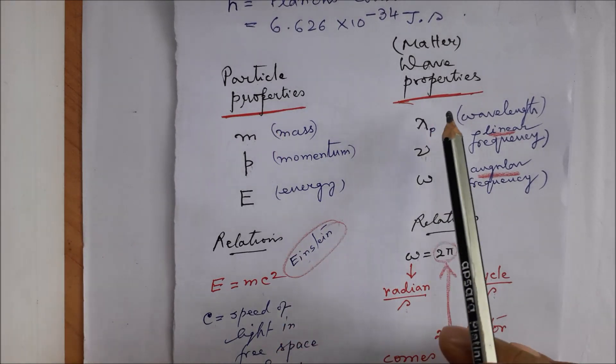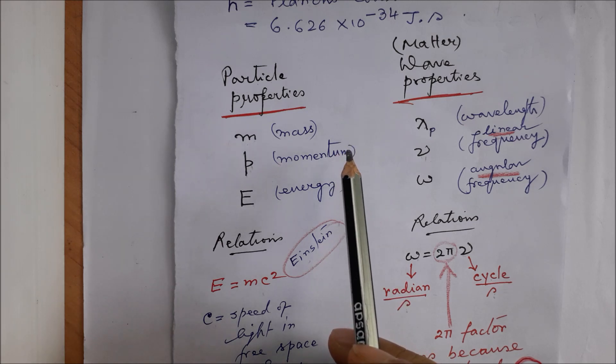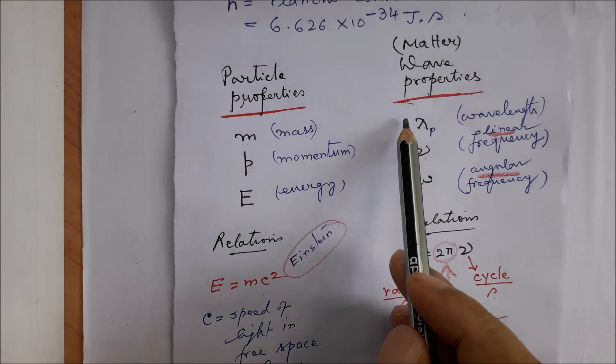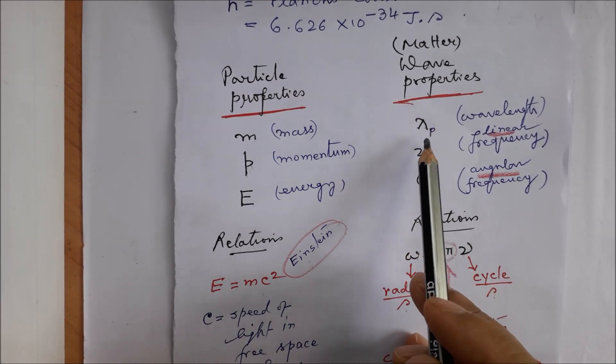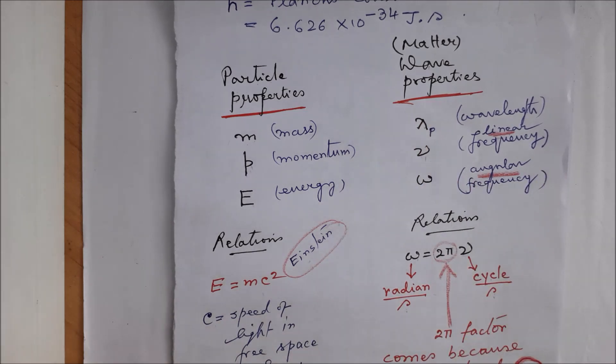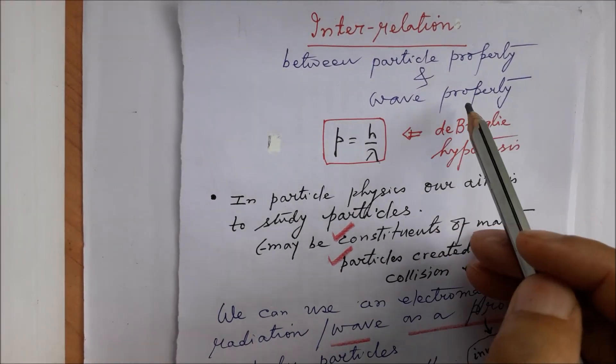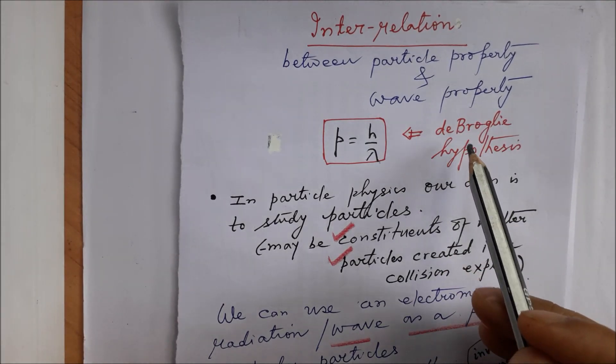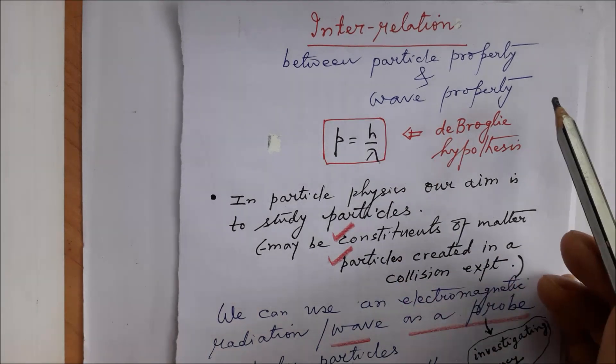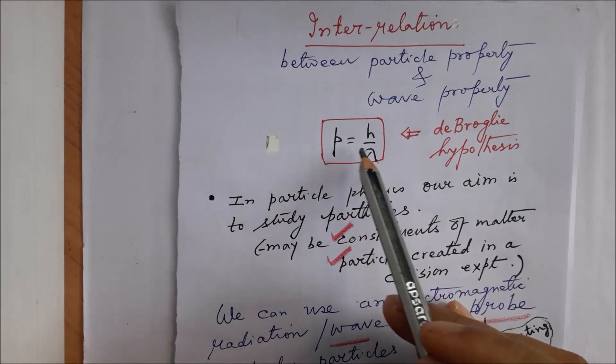Now coming back to the particle properties and wave properties which are possessed by system, it follows that if it so happens that the dimension of the system is smaller than its associated de Broglie wavelength, then wave properties will manifest as in the case of small particles. The particle property and wave properties are related by the de Broglie hypothesis or the de Broglie relation, which is p = h/λ. This holds for particles. Here p represents particle property and λ represents wave property, and they are interconnected through this equation.